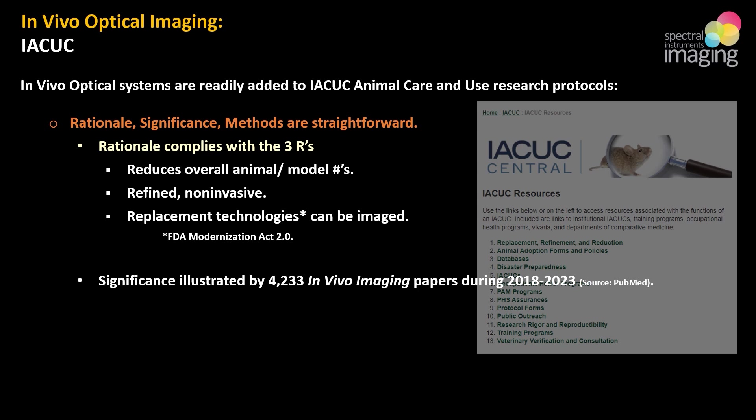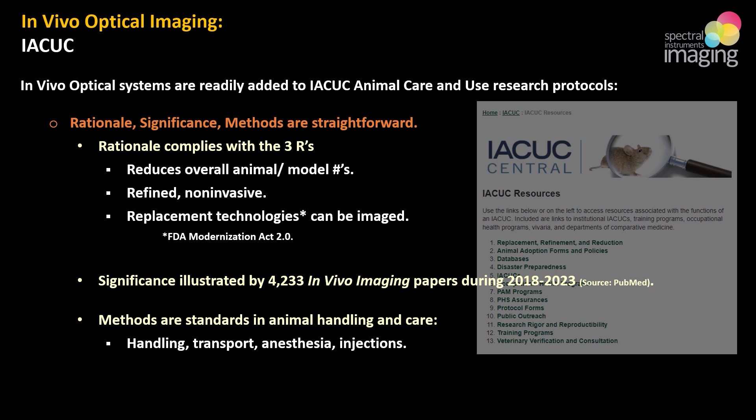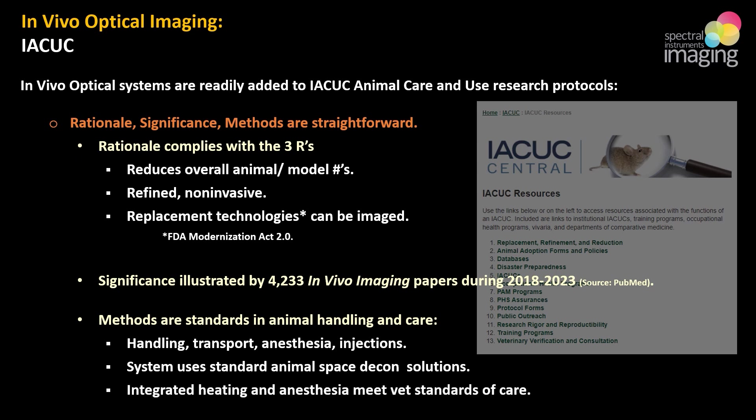The significance of this methodology is illustrated by over 4,000 in vivo imaging papers published during 2018 to 2023. Methods are standard in animal handling and care — handling, transport, anesthesia, and injections all fall well within well-defined guidelines. Systems use standard animal space decontamination solutions such as 70% ethanol and MB10, and integrated heating and anesthesia meet vet standards of care, keeping animal models warm in a steady controlled anesthetic plane.